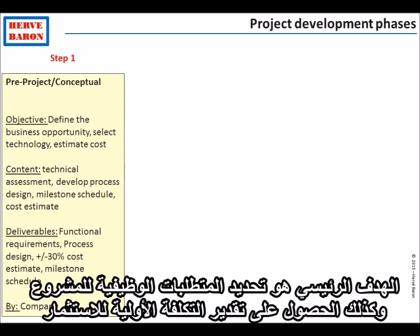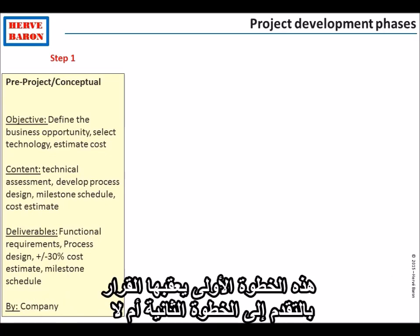The main objective is to define the functional requirements of the project as well as to obtain a preliminary cost estimate of the investment. Step one is sanctioned by a decision — a decision to go forward into step two or not.